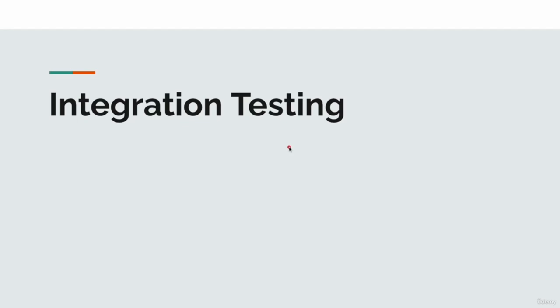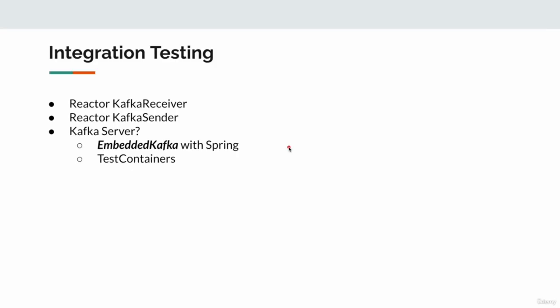In this section we are going to work on integration tests. We would be using Kafka receiver and Kafka sender, but we need a Kafka server to run for our services to produce and consume events. We are not going to mock our services, so we need a Kafka server. For that we have two options: test containers, which run a real Kafka container, or embedded Kafka, a simple in-memory solution for running integration tests.